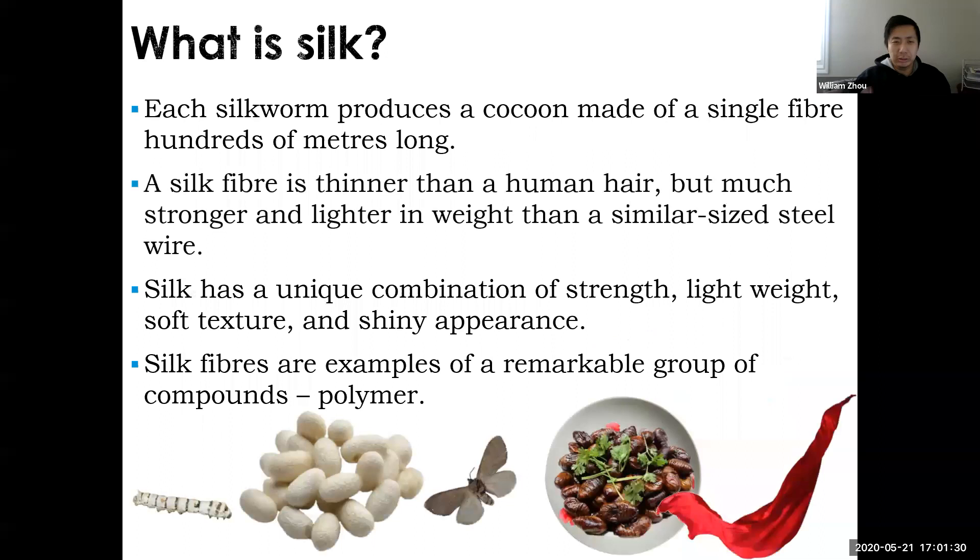So first of all, let's talk about silk. Silk, you may have seen or used in your life. It's a pretty popular material to use in fabric. It has some really interesting properties. Each fiber of silk is extremely thin, thinner than a human hair. But if you have a similar-sized steel wire compared to a silk wire, silk is not only stronger but also lighter.